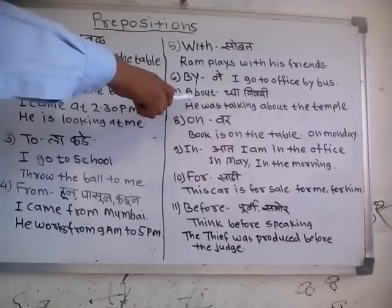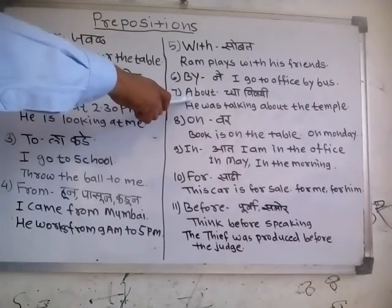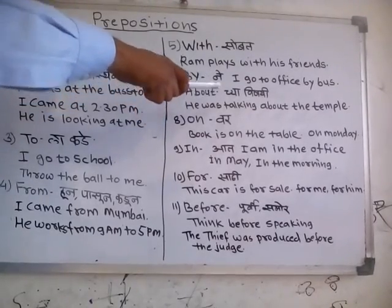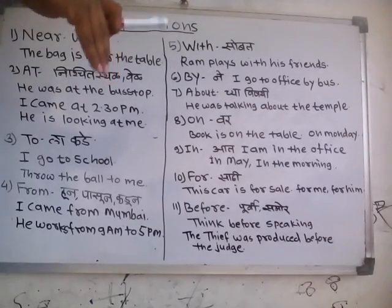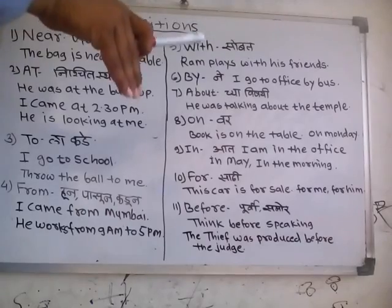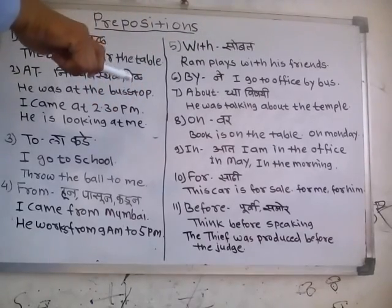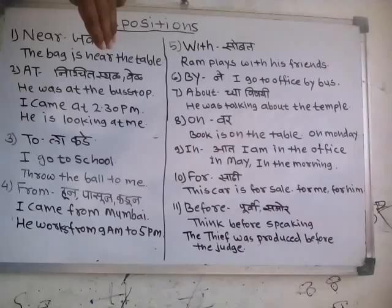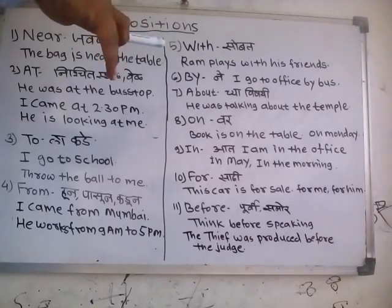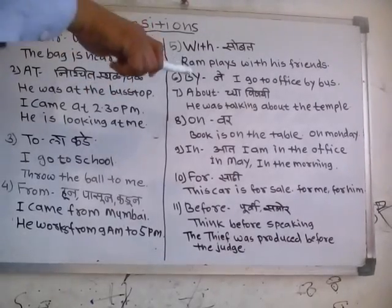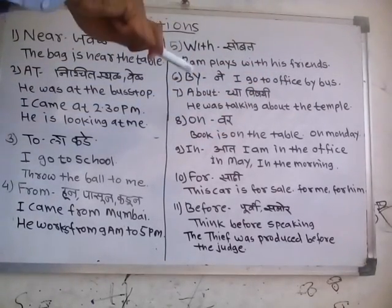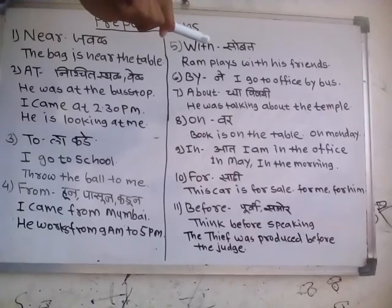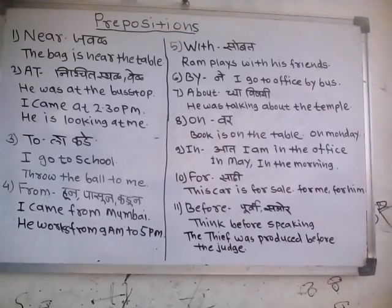Next is 'about'. 'About' is used to show more information. Whenever you want to show more information about a particular thing, you can use 'about'. Here we learn how to use 'about' as a preposition. For example: He was talking about the temple — meaning he was telling some more information about the temple.